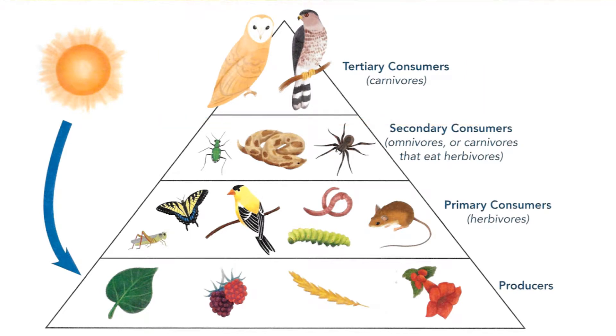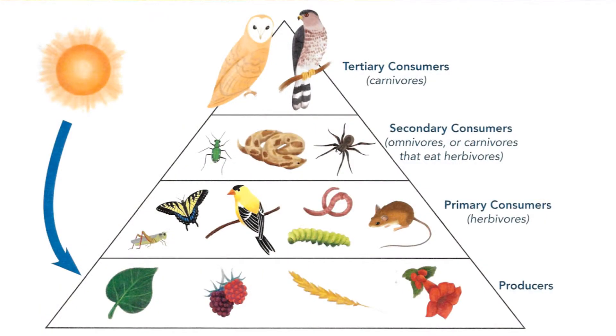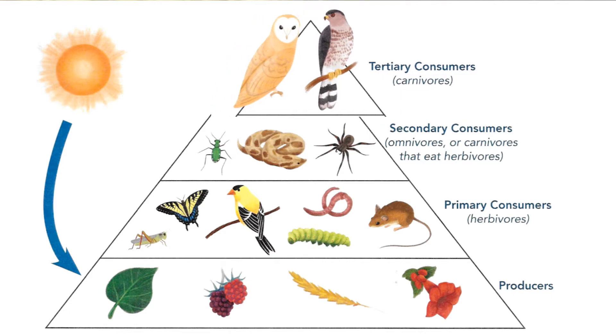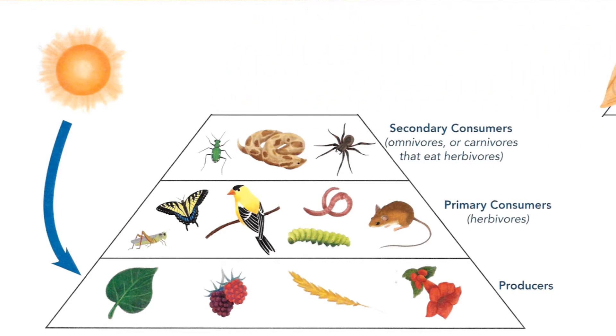Sometimes these ecosystems can get unbalanced. An imbalance happens when a lot of creatures are removed from one trophic level.